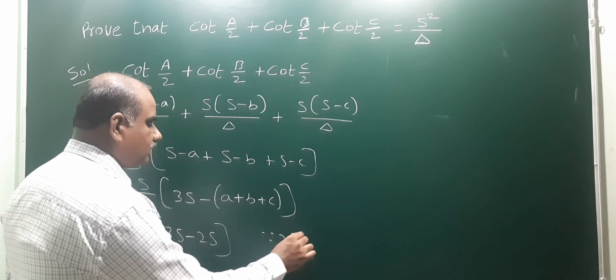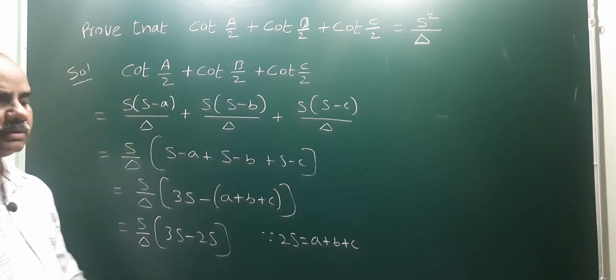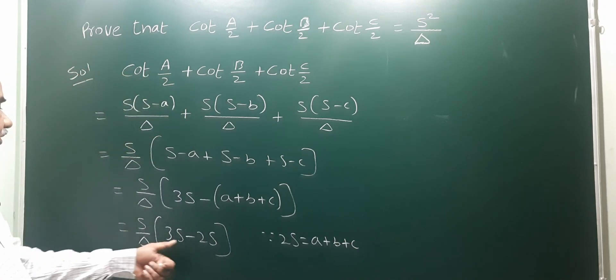Since 2s equals a + b + c, this is the perimeter of the triangle formula.